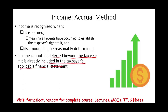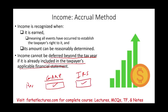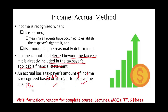Once revenue is recognized for GAAP, it has to be recognized for the IRS as well. An accrual taxpayer's amount of income is recognized based on their right to receive the income — that's what determines when and how much is recognized.